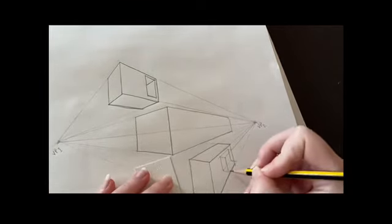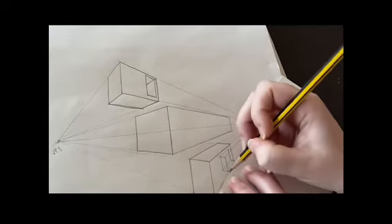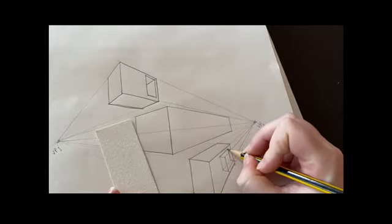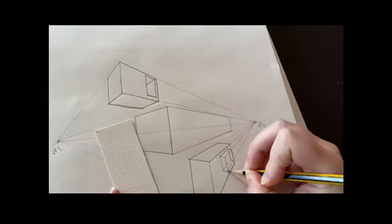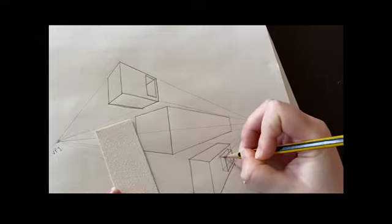Then I'm going to join that parallel down and then the corner that's left can join up to vanishing point two to give me the bottom edge of that. Then we can darken in that outline to show the final shape of the little box that we've added on to the front. So we can add cutout shapes but we can also add shapes onto our boxes in perspective too.